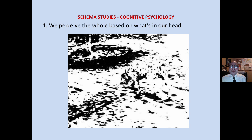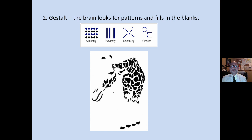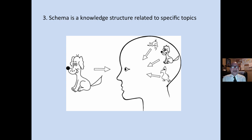Some schema studies from cognitive psychology: we use what's in our head to create meaning. That's a series of dots, but based on the knowledge in our head, we put that together and we see a Dalmatian there, hopefully sniffing the ground. This is the theory of Gestalt — the brain looks for patterns and fills in the blanks. And again, a bunch of dots, but our brain fills in the blanks and we see a giraffe.